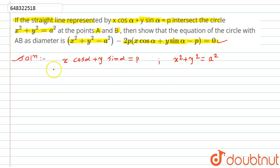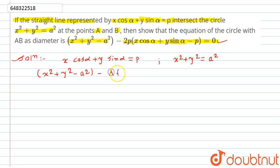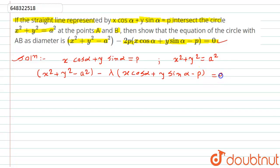So what we will do — as we know, if a straight line and a circle intersect each other, then in that case the equation of that circle is given by x squared plus y squared minus a squared minus lambda times of x cos alpha plus y sine alpha minus p equals 0, where lambda is a scalar.